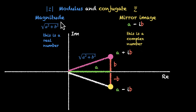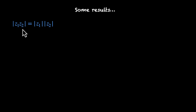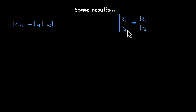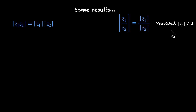Now let's look at some properties of mod and conjugate — mod first. If you have two complex numbers z1 and z2, you multiply them and then take the mod, you get the same thing as when you multiply their mods. The same works for division: |z1/z2| = |z1|/|z2|. It goes without saying that z2 or mod z2 should not be equal to zero, because dividing by zero breaks math.